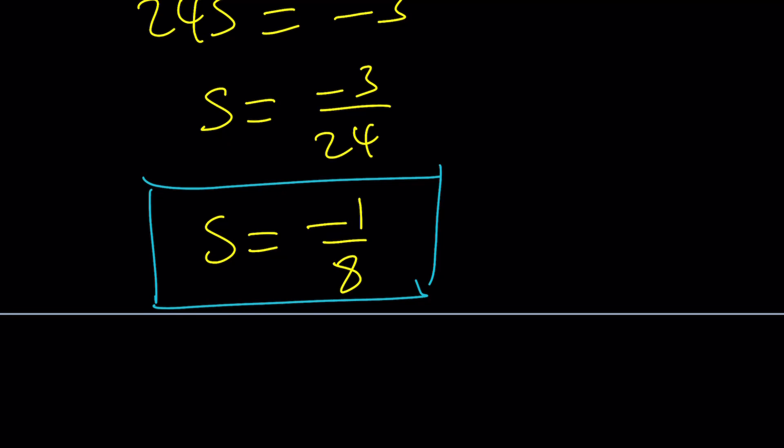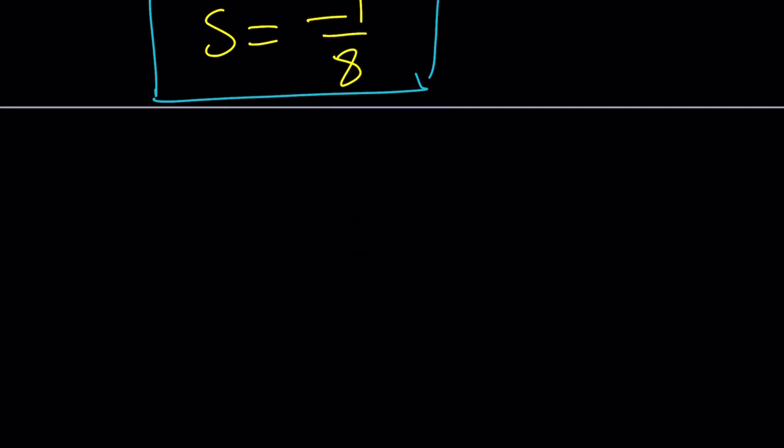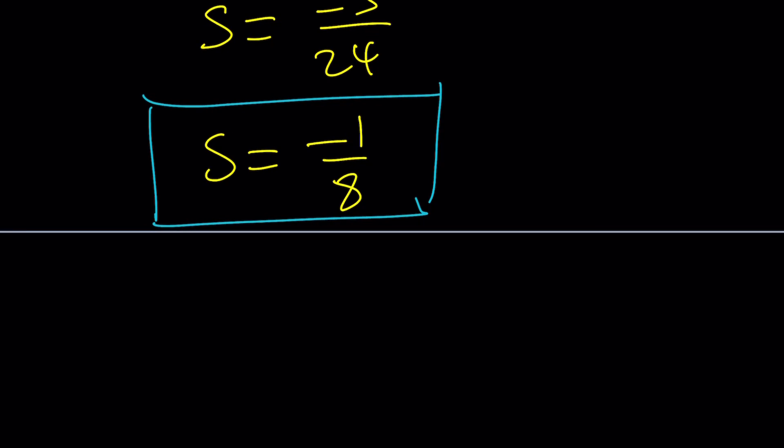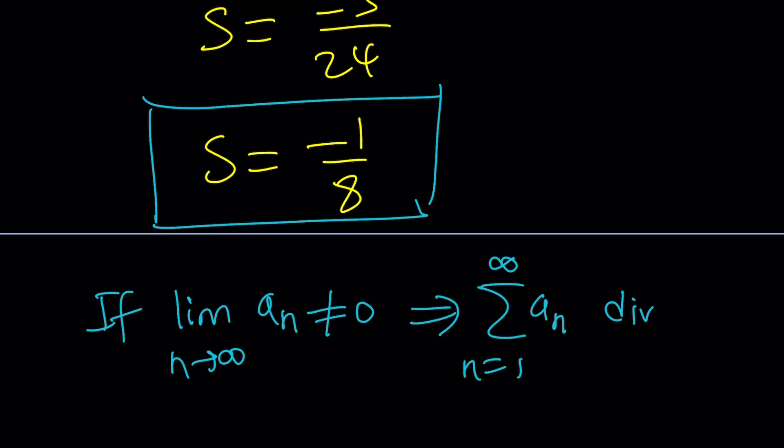Here is a fact that we know is true. If limit of a sub n as n approaches infinity does not equal 0, then the series n equals 1 to infinity a sub n diverges.